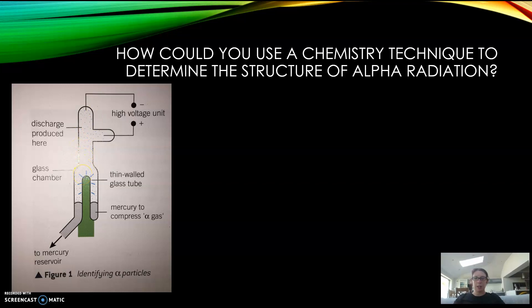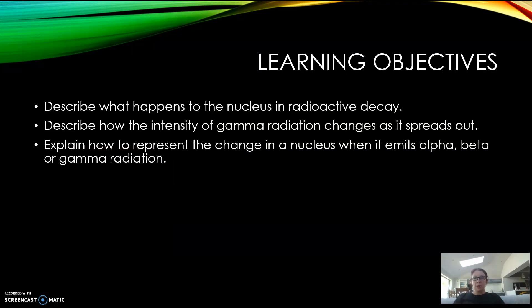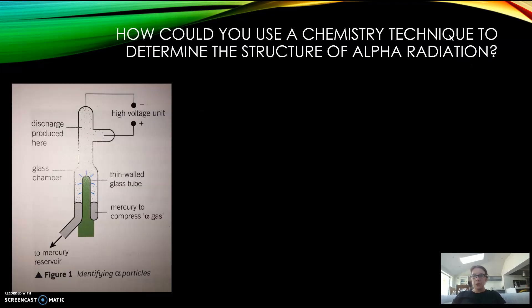The learning objectives are to describe what happens to the nucleus in radioactive decay, describe how the intensity of gamma radiation changes as it spreads out, and explain how to represent the change in the nucleus when it emits alpha, beta or gamma radiation.